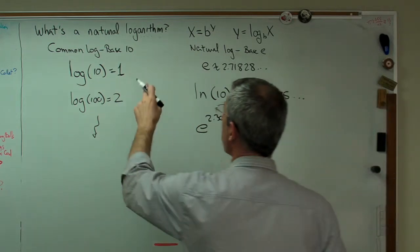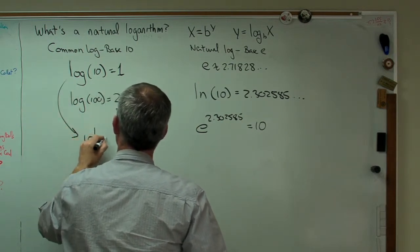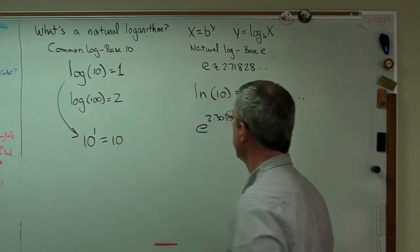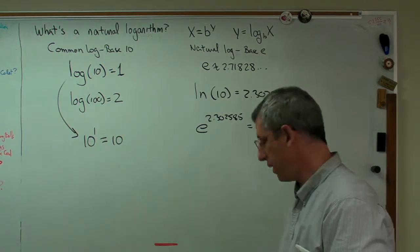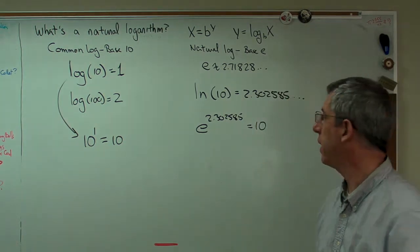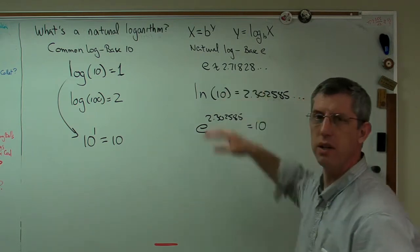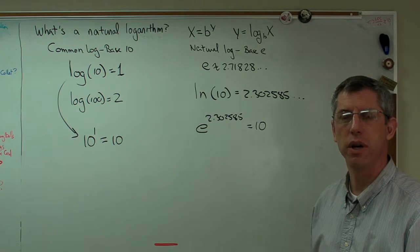Just like over here, 10 to the 1 equals 10. They're just two different ways of writing the same thing. Now, the big question, the question I always have is, why E? Why not some other number? Why would you pick this strange number that you have to derive?